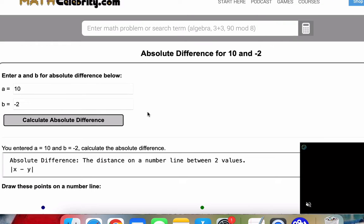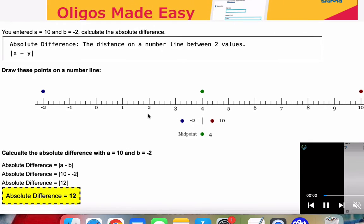So once we're ready, we'll go ahead and click the button. And the first thing it says is you entered a equal to 10 and b equal to negative 2. Calculate the absolute difference.